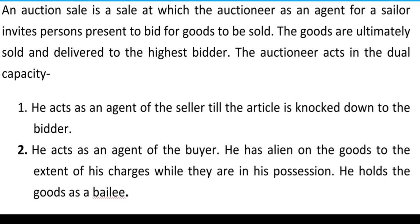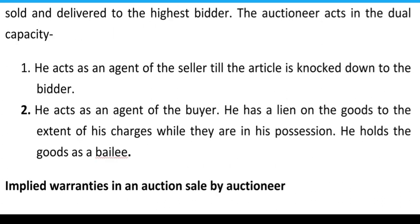The auctioneer acts in a dual capacity. First, he acts as an agent of the seller till the article is knocked down to the bidder. Next, he acts as an agent of the buyer. He has a lien on the goods to the extent of his charges while they are in his possession. He holds the goods as a bailee. Auctioneer को दो capacity में काम करना रहता है — seller का agent knocked down होने तक, और buyer का agent भी रहता है goods hold करते हुए as a bailee। जब तक उसके lawful charges recover नहीं होते तब तक वो lien कर सकता है।